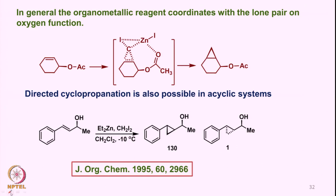In a similar fashion, acetates also give chelation-directed cyclopropanation through the acetate oxygen to the zinc part of the carbenoid. Even open-chain molecules with an asymmetric center where the OH group is beta-oriented give highly selective cyclopropanation — a ratio of 30:1 — published in 1995. This demonstrates the huge effect of chelation of zinc carbenoids with heteroatoms leading to stereoselective cyclopropane formation.